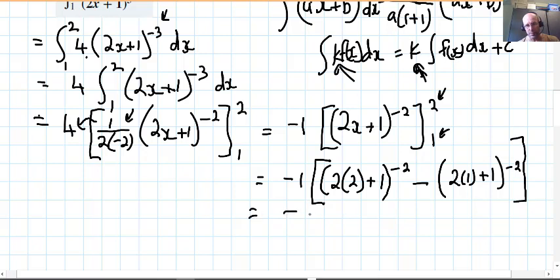That negative one I'm just going to put as a negative on the front. So we have 4 plus 1 is 5, we have 5 to the negative 2. And we have in the second set of brackets, we have 2 times 1 is 2 plus 1 is 3, 3 to the negative 2.